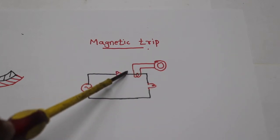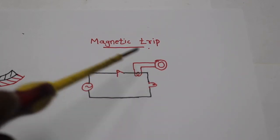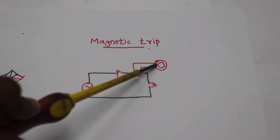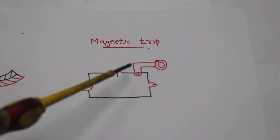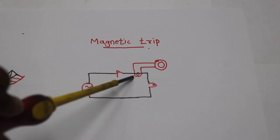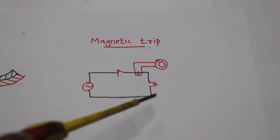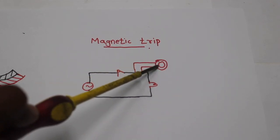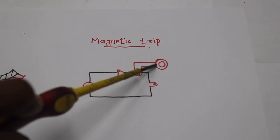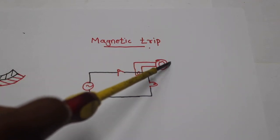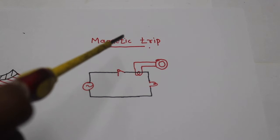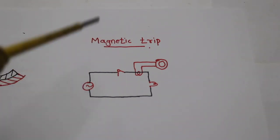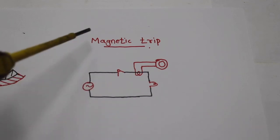Now we have a load. In this case, current flows into the metal. When it comes to an overcurrent, it flows as a large current. When this large current flows, it acts as a magnet and attracts the other metal. This is the mechanism that makes the MCCB trip. This is short-circuit protection — the magnetic trip.